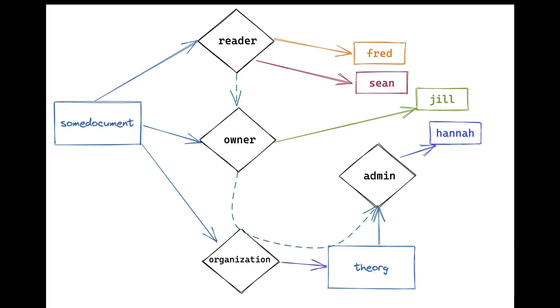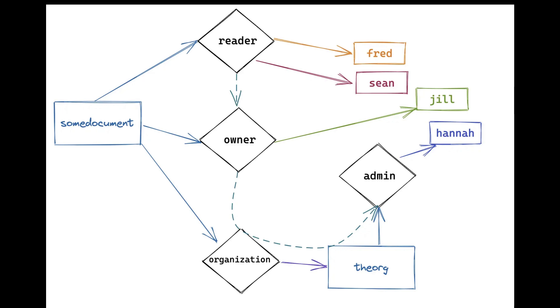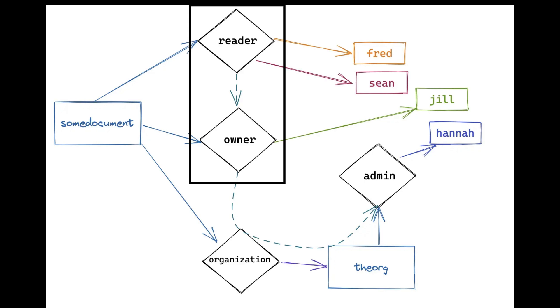Let's talk about the data schema and the API, and how you make permission checks in Zanzibar. Zanzibar provides a structured way to store permissions as tuples. In a real-life example, you have a document named SumDocument with two readers — Fred and Sean — and an owner, Jill. There is a dotted arrow from reader to owner to show that owners of a document can also read the document.